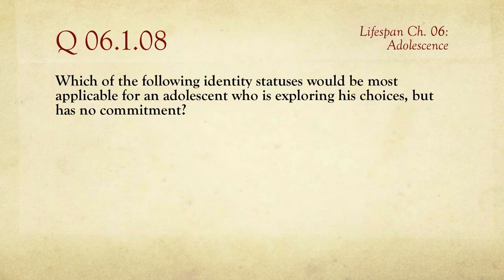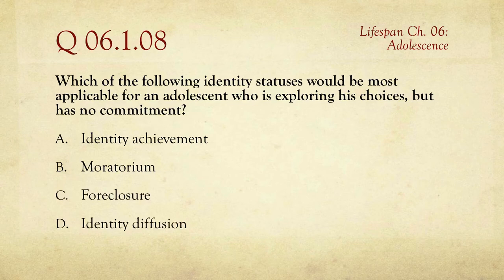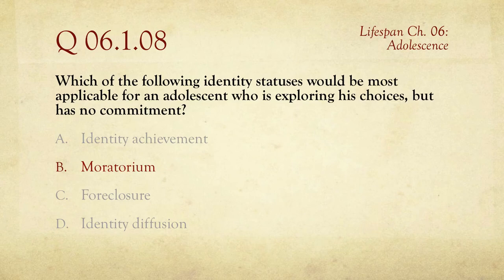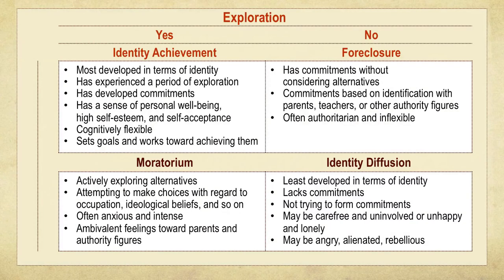Question number eight: which of the following identity statuses would be most applicable for an adolescent who is exploring his choices but has made no commitment? The choices are identity achievement, moratorium, foreclosure, and identity diffusion. If they are exploring but have not made a commitment, the answer is moratorium. It sounds like it means you're dead — what it really means is 'I'm working on it, get back to me later.' On the identity status grid, moratorium is bottom left: exploring but not yet committed.